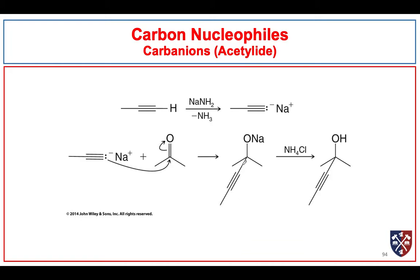Carbon nucleophiles. We've already discussed that terminal alkynes are more acidic than most hydrocarbons. The C-H bond here — we can remove the proton so long as we have a decently strong base. The pKa for this proton is about 25.